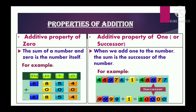Now the last property is the additive property of 1, or you can call it the successor property. When we add 1 to a number, the sum is the successor of that number. For example, 48,976 plus 1 gives 48,977, which is the successor. Also 9999 plus 1 gives the successor 10,000.